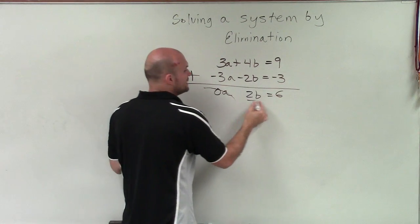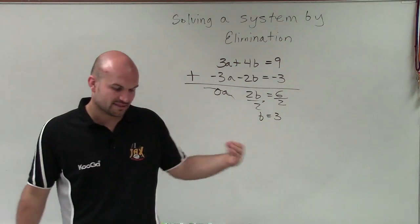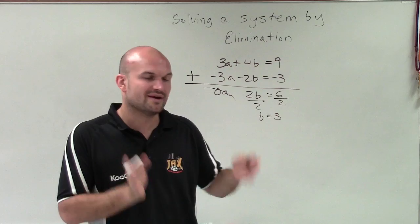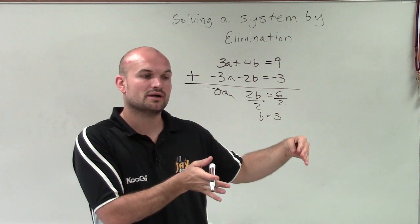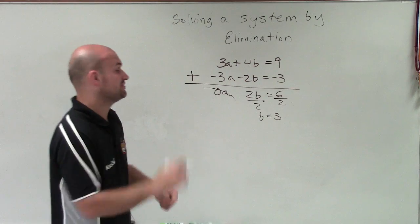Now, to solve for b, I divide by 2, and I get b equals 3. Now, the thing that I liked about substitution is we have one variable already solved, so it's easy to plug in and find what the other value of the variable is.